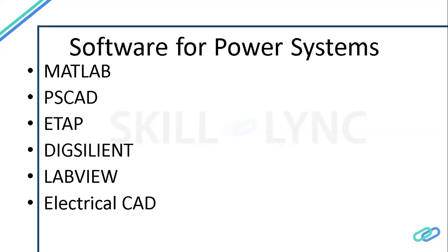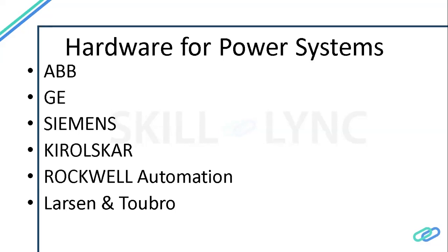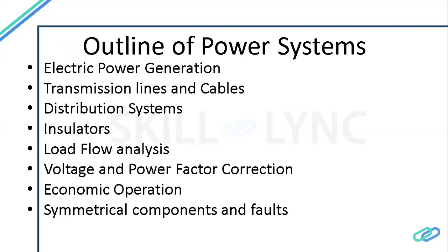Coming to hardware power systems, the major player is ABB — they produce protection systems and drive systems. ABB and GE are the major hardware players for real-time implementation. Siemens, Clausco, and Rockwell Automation are also major players. Rockwell Automation focuses mostly on drive systems, and Lanxess Turbo focuses mostly on transmission line implementation systems.